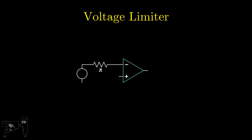The next application we'll see is the voltage limiter. These are comparator circuits where the output is limited to a predetermined value. The circuit looks like this.